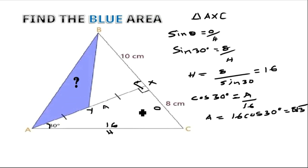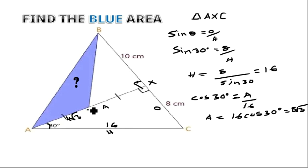If we divide AX into two equal parts, the length AY will be 4√3 and the length YX will also be 4√3.